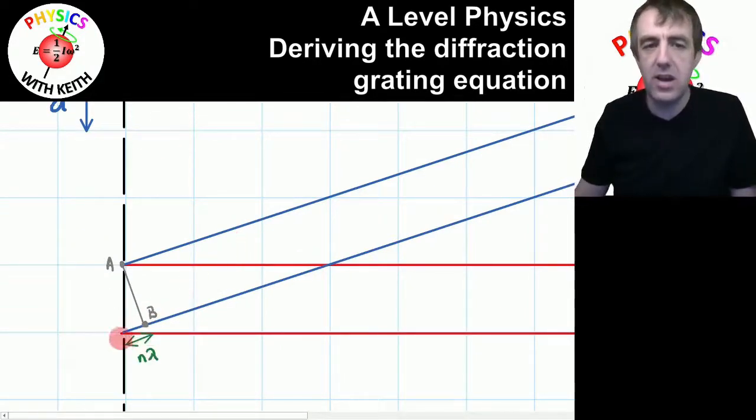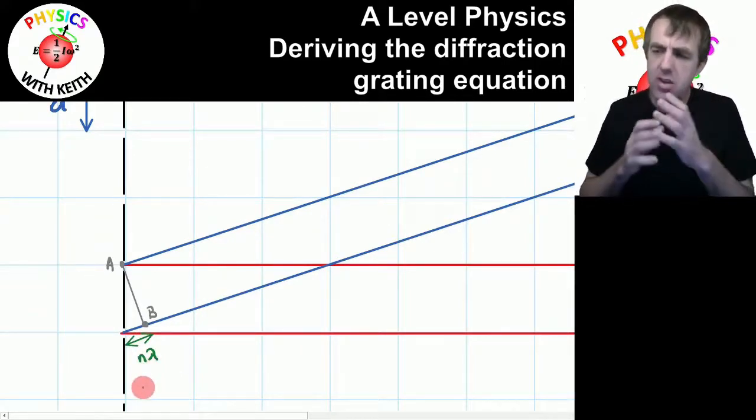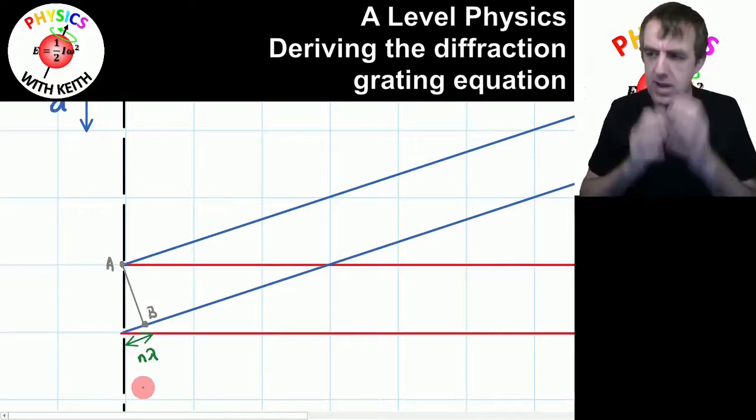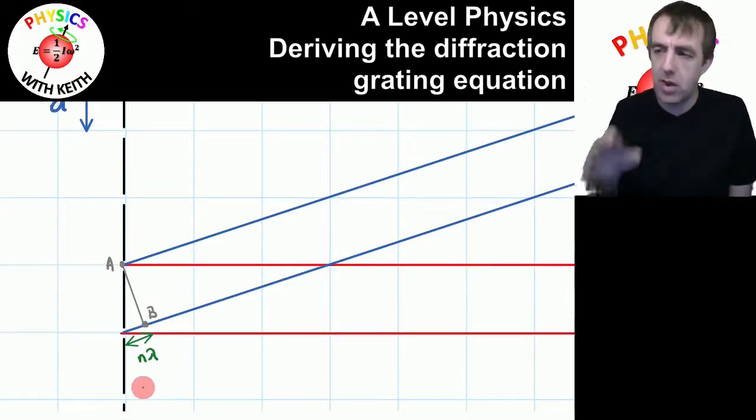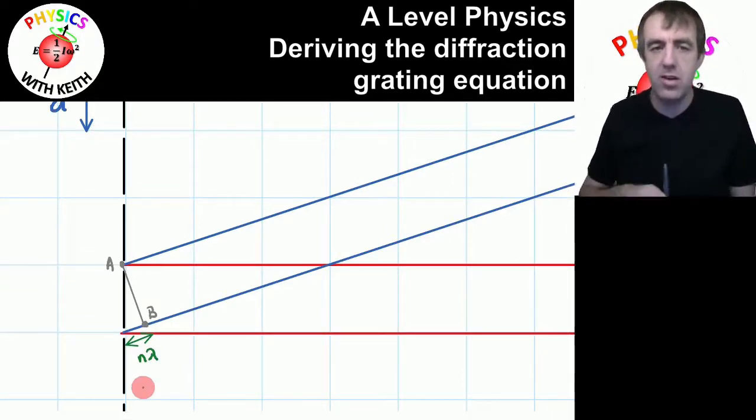So this additional bit here has a path difference of n lambda, where in this case, n equals one. But can you see that every time n takes an integer value, we will have a bright spot, there will be constructive interference.